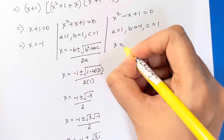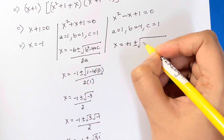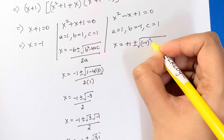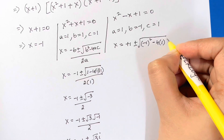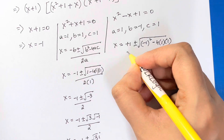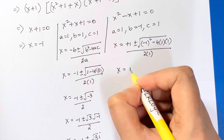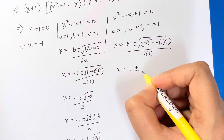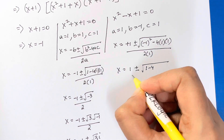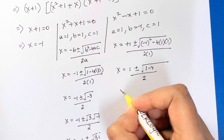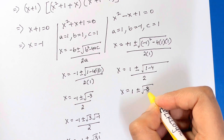For the third equation x²-x+1 = 0, we have a=1, b=-1, c=1. Substituting into the quadratic formula: x = (1 ± √((-1)² - 4·1·1)) / (2·1), giving x = (1 ± √(1-4)) / 2.